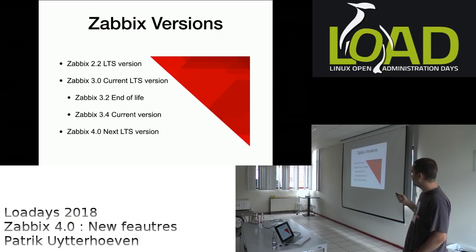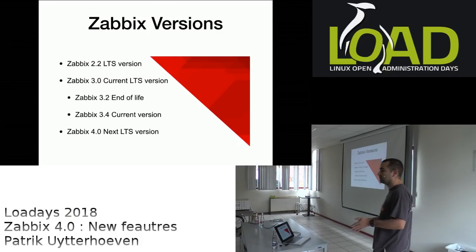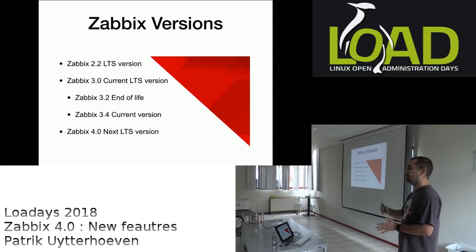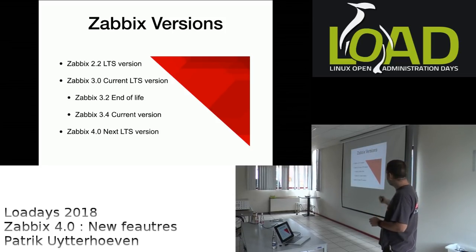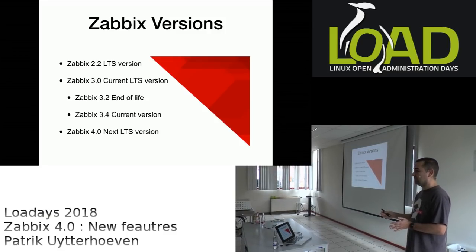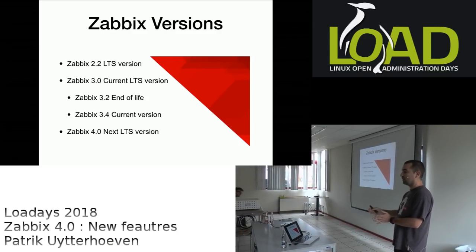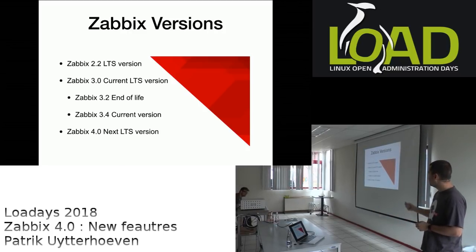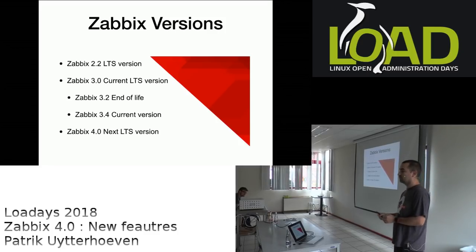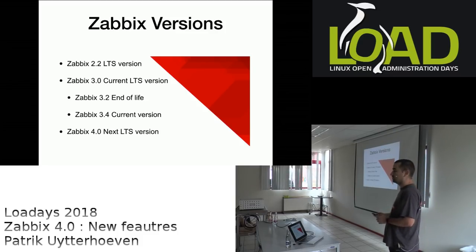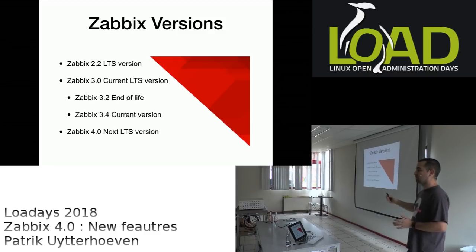Zabbix has a certain release policy. They release an LTS version and then between two LTS versions they release minor versions, roughly every six months — though it's not always exactly six months. So after 3.0 you get 3.2, then 3.4, and support for 3.2 ends about one month after 3.4 is released. That's why, if you're going to production, you should stick with LTS versions so you have longer support.